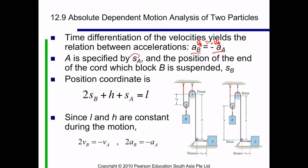A is specified by SA and the position of the end of the cord where block B is suspended is SB. Looking at this example, we have SB here and another SB here. So this is 2SB, and we have one H, and one SA. So the cord that we consider that changes will be L, and we don't put it as LT because we only consider the L which is going to change with respect to time.